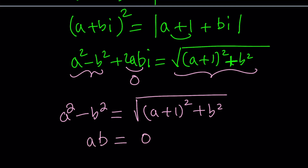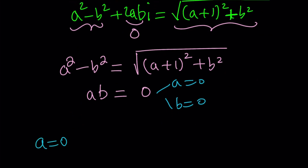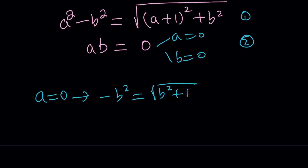AB equals zero implies either A equals zero or B equals zero, so we look at each case separately. Starting with A equals zero: substituting into the first equation gives negative B squared equals the square root of B squared plus 1. This raises the question: does this make sense? Well, negative B squared cannot be positive, and the square root of B squared plus 1 must be positive.